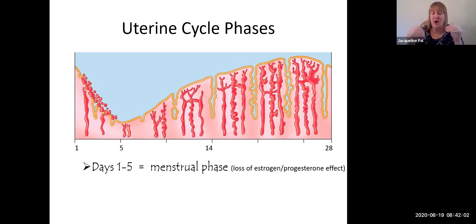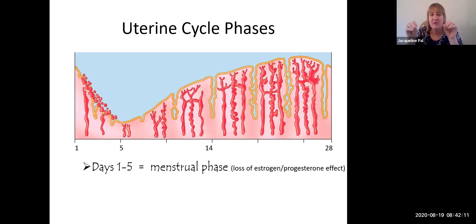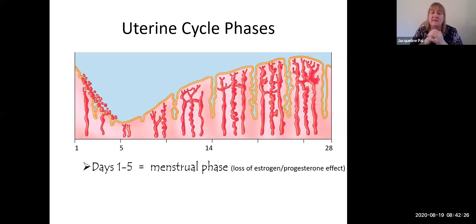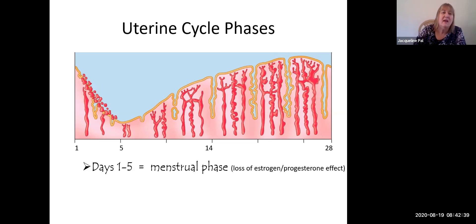It doesn't really matter if your period lasts three days or seven days — by convention, cycles are made to be 28 days, even though the vast majority of women, 85 percent or more, don't have 28-day cycles. We also say periods last five days. You are sloughing your functional layer because of the plummeting levels of estrogen and progesterone, because the corpus luteum went on strike.